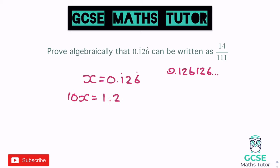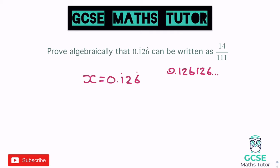If I times by 10 I'd get 1.261, if by 100 I'd get 12.612 — nothing lines up. So with three recurring decimals we're going to have to times by the next place value: 1,000. One recurring decimal → times by 10; two → times by 100; three → times by 1,000. So 1,000x equals 126.126 with that recurring pattern again — you can see they line up.